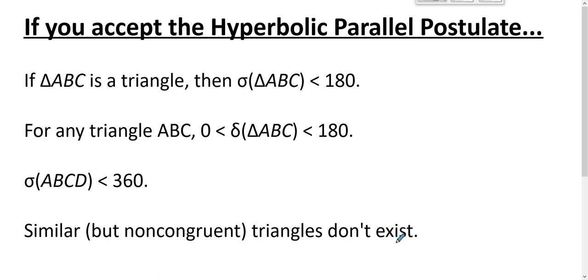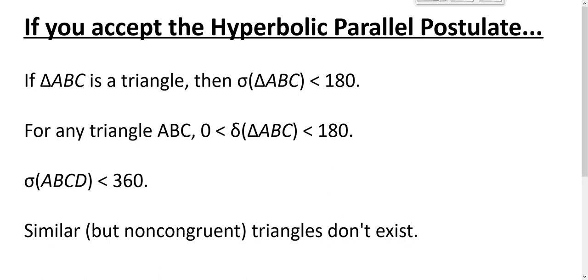The summit angles of a Saccheri quad are acute. Just a reminder: you have Saccheri quad ABCD—we know these two angles are congruent. If they're both right angles, then you've got a rectangle with an angle sum of 360. So instead we know they must be acute. They can't be obtuse—that makes the angle sum too big.